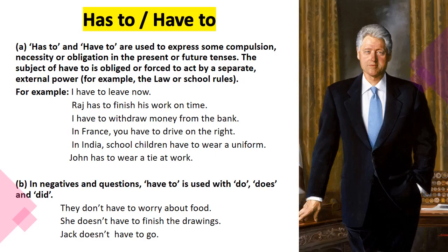In negatives and questions, 'have to' is used with do, does, and did. 'Did' is used for the past. For example: 'They don't have to worry about food.' 'She doesn't have to finish the drawing.' 'Jack doesn't have to go.' So for 'has to,' we use 'doesn't have to,' and for 'have to,' we use 'don't have to.' Let us study this rule in detail in the next slide.